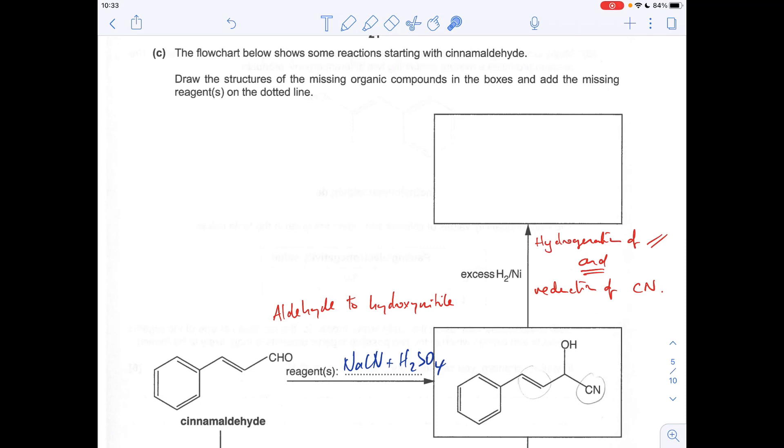If we do this reaction next, there's potential to maybe miss one of these out. So we've actually got two functional groups that can react with the excess hydrogen and nickel catalyst. We can hydrogenate the carbon-carbon double bond, and that'll obviously turn into an alkane. We'll just saturate it.